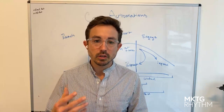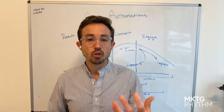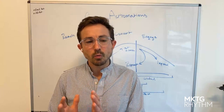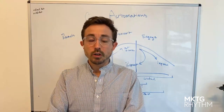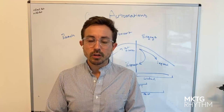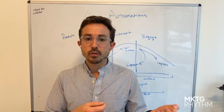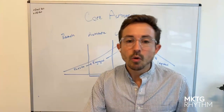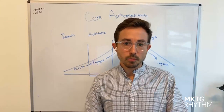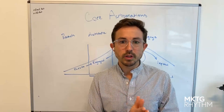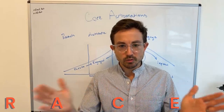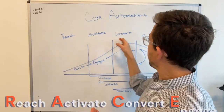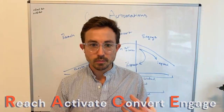For most e-commerce businesses looking to grow, these six automations fit really well into what they're already doing and ideally align with their customer journey so they can have the most impact possible. At Marketing Rhythm, we like to look at this from the RACE framework — using the reach, activate, convert, and engage stages of that customer journey.